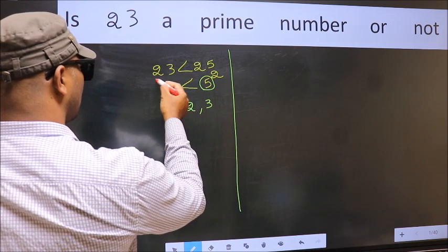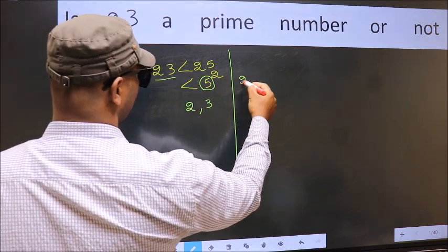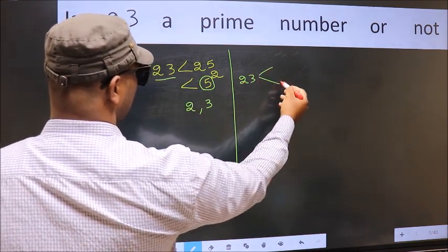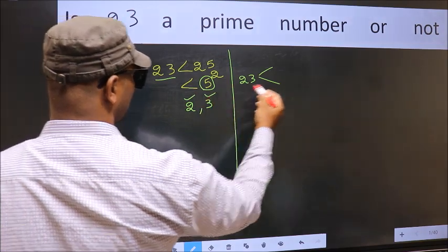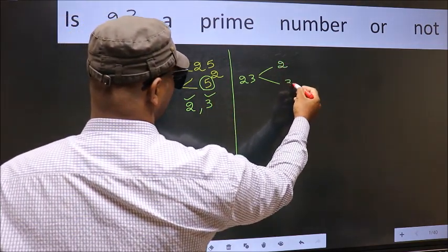Now for this given number, we should check divisibility by these numbers, 2 and 3.